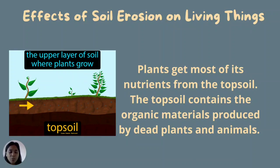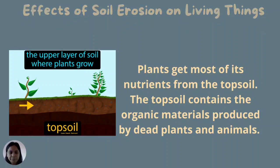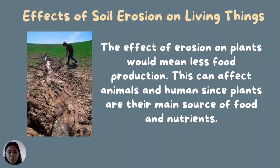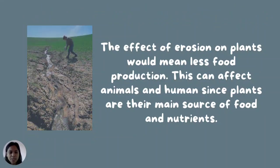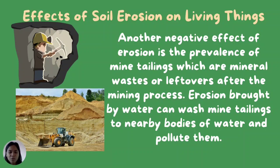In addition, sediments washed away by water can clog irrigation systems and further inhibit the plant's water supply. The effect of erosion on plants means less food production, which affects animals and humans since plants are their main source of food and nutrients. Another negative effect of erosion is the prevalence of mine tailings — mineral waste or leftovers after the mining process. Erosion brought by water can wash mine tailings into nearby bodies of water and pollute them, affecting aquatic plants, animals, and the potable water supply.